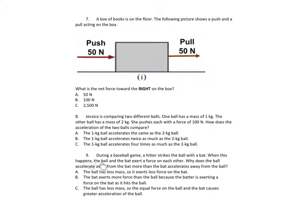Number 9. During a baseball game, a hitter strikes the ball with a bat. When this happens, the ball and the bat exert a force on each other. Why does the ball accelerate away from the bat more than the bat accelerates away from the ball? A. The ball has less mass, so it exerts less force on the bat. B. The bat exerts more force than the ball because the batter is exerting a force on the bat as it hits the ball. C. The ball has less mass, so the equal force on the ball and the bat causes a greater acceleration on the ball.